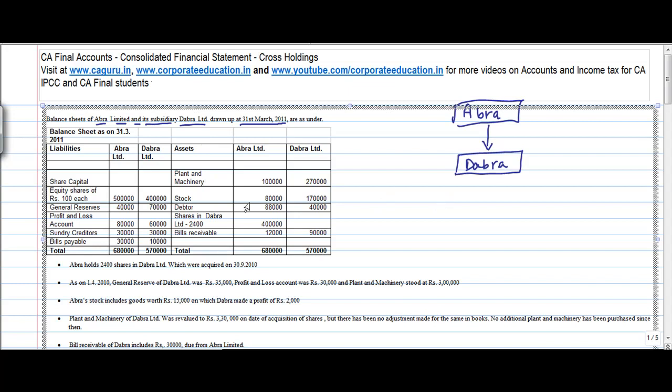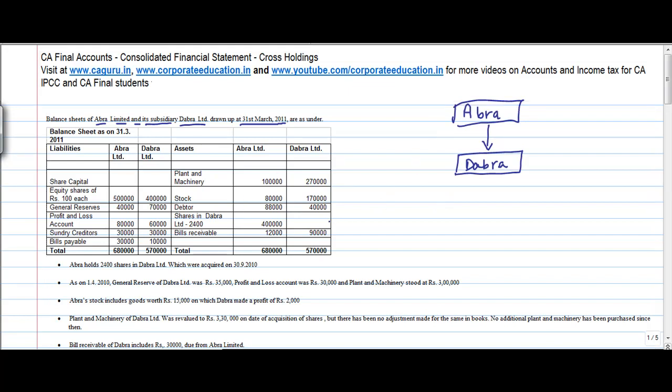So basically we are told that Abra Limited owns 2400 shares in Dabra Limited which is 2400 divided by, how many shares are there for Dabra Limited? 4 lakh shares of 100 each. So this will be 4 lakh shares divided by 100 or 4000 shares. This gives me basically 3 upon 5th of share capital of Dabra.